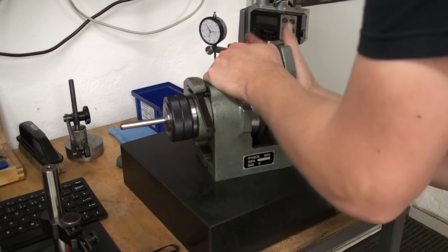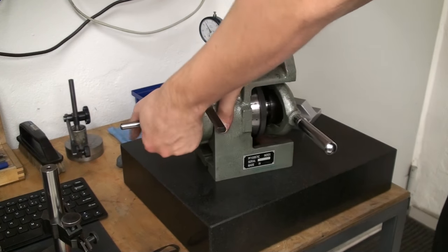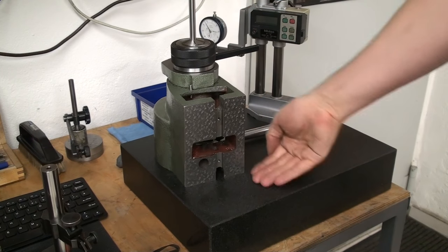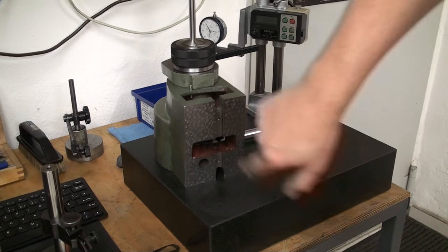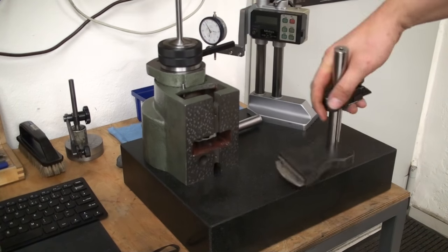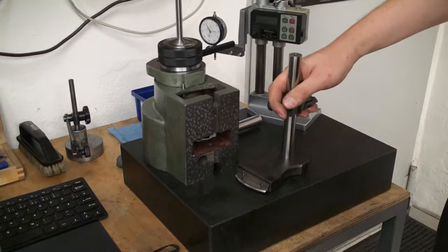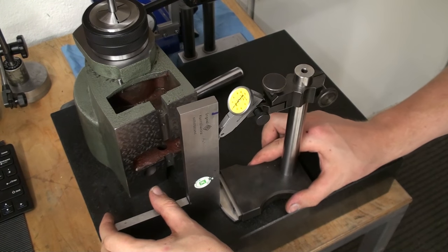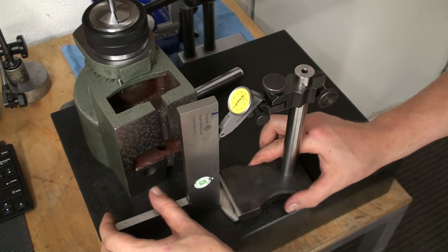Next thing that we can check is, let me stand it upright, if the rear surface is square to the bottom surface and we can use my squareness comparator for that. Okay, setting my squareness comparator to zero using my big reference square.